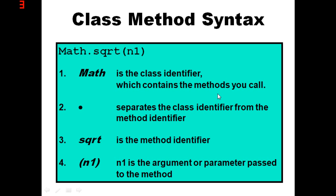Now let's go to the class method syntax. Math is the class identifier, and inside that class there are a bunch of methods that you call. The dot basically separates the class from the method. Then you've got sqrt which is the method identifier, and num1 is the argument or parameter passed into the method. You're taking that integer, passing it into the method, and the method uses it in place of the default number inside.